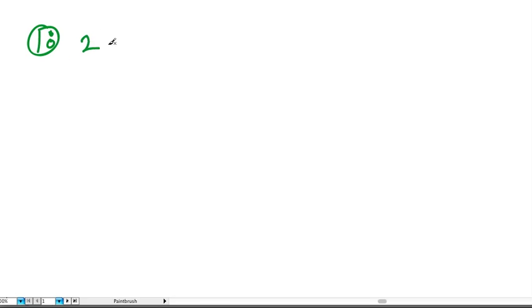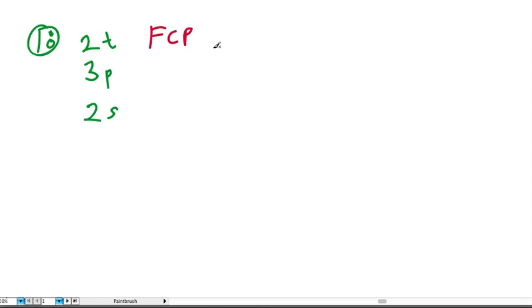Let's write out the important things that Sam has. Sam has two t-shirts, three pairs of pants, and two pairs of sandals. It tells us to use something called the FCP — the Fundamental Counting Principle — to find out how many different combinations he could wear.